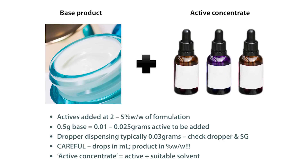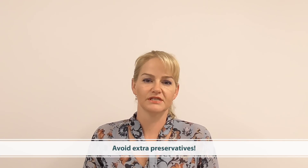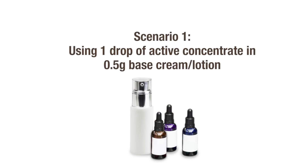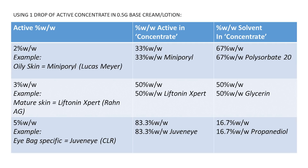The active concentrate needs to be the active mixed in a suitable solvent in the right proportion. In my examples you'll see me use glycerin, propanediol, and polysorbate 20, depending on the needs of the active. Remember that the active concentrate needs to be stable and needs to mix readily with the base cream. It should also avoid the need for extra preservatives, because consumers don't want to see any extra preservatives in their products if they can help it. On this slide you can see an example table of how much active to use in different types of solvents if you're applying one drop of an active concentrate.